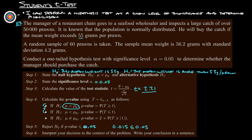Which means that the mean weight is not going to be 55 grams - it's actually going to be more than 55 grams per prawn. So that means that we conclude that the mean weight exceeds 55 grams per prawn, so the manager should purchase the catch.